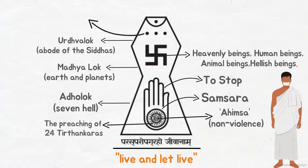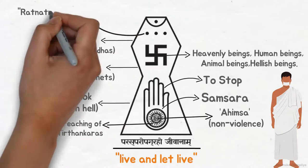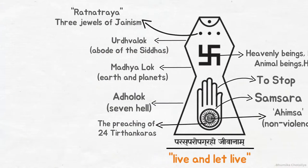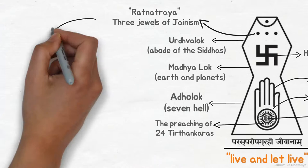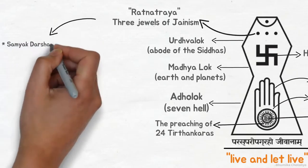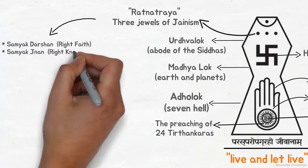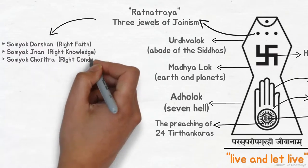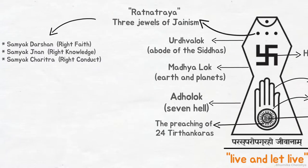The three dots above the swastika represent Ratnatri, the three jewels of Jainism. Samyak Darshan means right faith, Samyak Gnan means right knowledge, and Samyak Charitra means right conduct. We should have all three — right knowledge, right faith, and right conduct — together; only then can we achieve liberation.